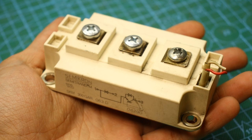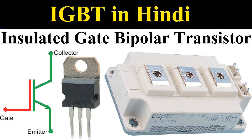Key concepts behind IGBT operation: Gate control — the IGBT is a voltage-controlled device, meaning only a small voltage, rather than a large current, is required to control a much larger current between the collector and emitter. The gate terminal is insulated by a thin oxide layer, allowing it to control the device without requiring a significant amount of current, similar to a MOSFET. Conduction via charge carriers — when the IGBT is turned on, both electrons and holes are involved in current conduction, making it efficient for handling large currents. This bipolar behavior gives the IGBT its high current capability, similar to a BJT.